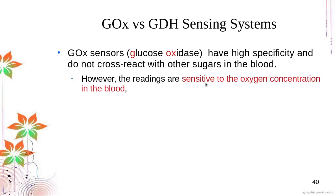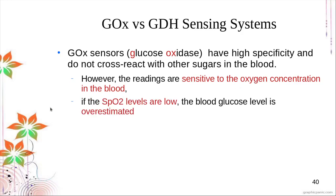However, GOX sensor readings become sensitive when there is high oxygen concentration. Although very specific, the reading can be affected by SpO2 — the amount of oxygen carried by hemoglobin. At low SpO2 levels, blood glucose levels are overestimated because oxygen affects the performance of glucose oxidase.